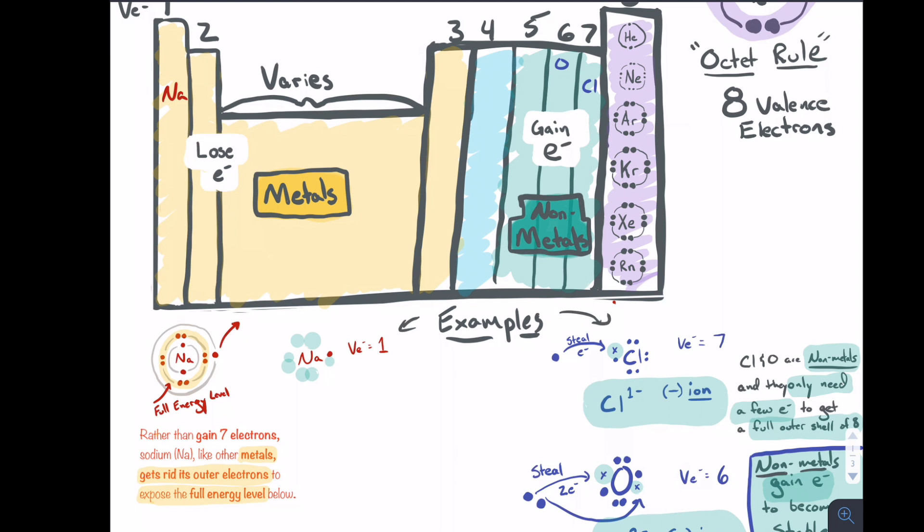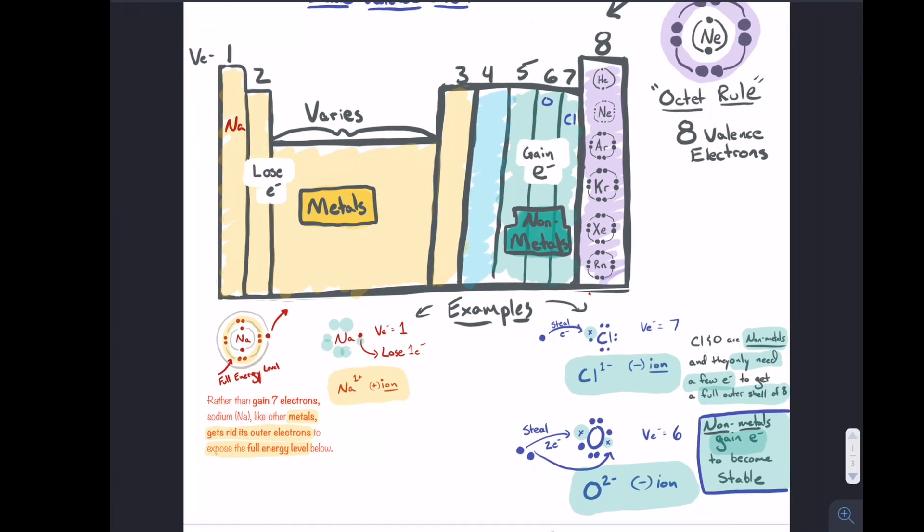That is what sodium and other metals tend to do. They tend to lose electrons. Sodium gets rid of its one electron, and because it lost a negative, it's going to become positively charged. So it'll be a positive ion, and in this case, since it lost one electron, it would be positively charged.